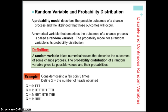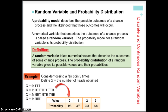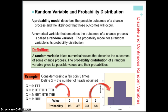We can get zero heads one way and three heads one way — that's heads, heads, heads. Both one head and two heads result from a combination of heads and tails. You can see our probability distribution: because there's only one way to get tails, tails, tails, we have a probability of one-eighth associated with zero heads, and so on. When we graph this, it looks like a histogram made up of bars. The horizontal axis shows the possible outcomes for random variable X, and the vertical axis shows the probability associated with each outcome.